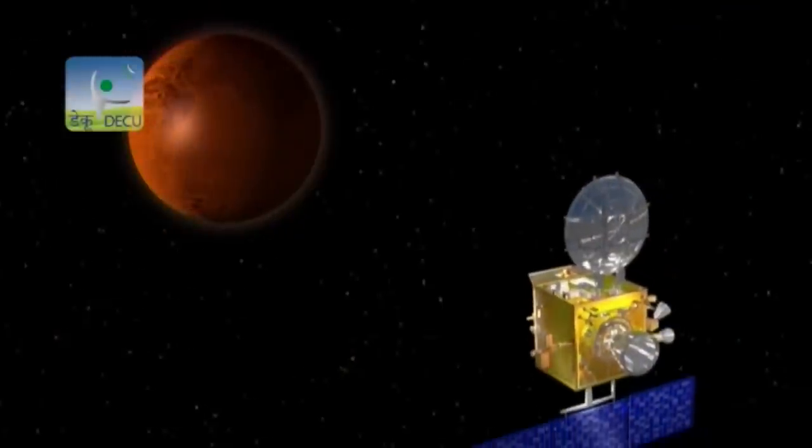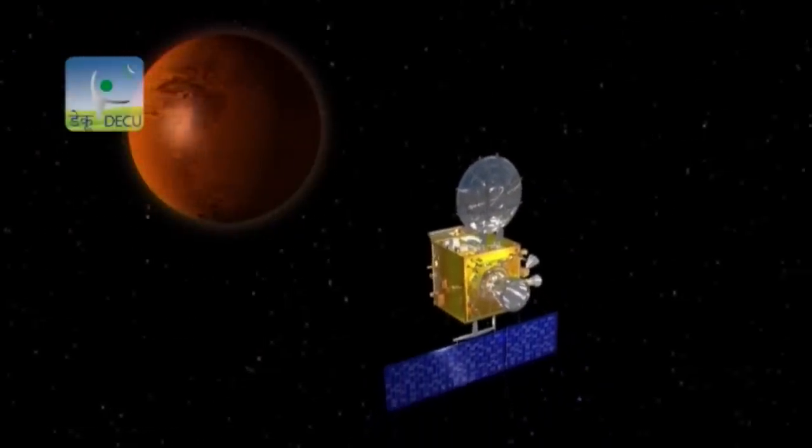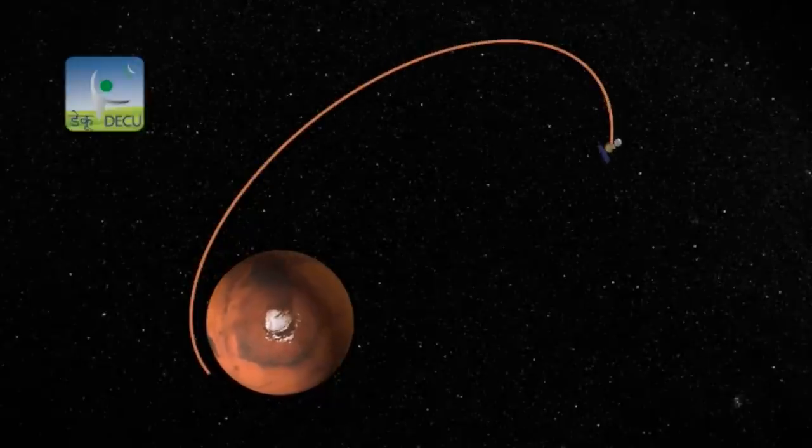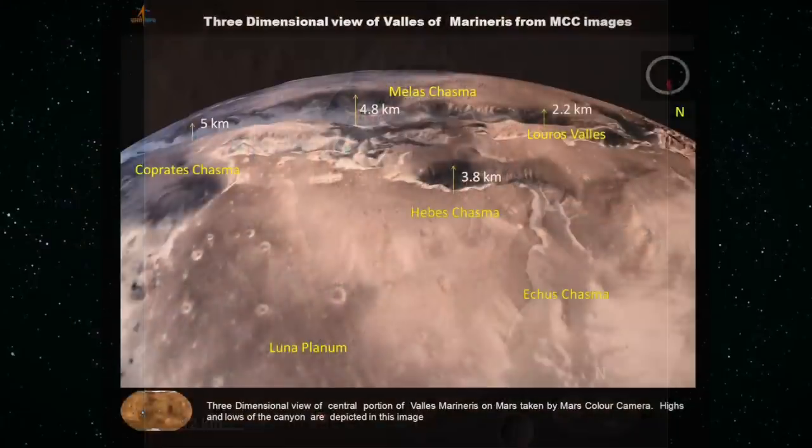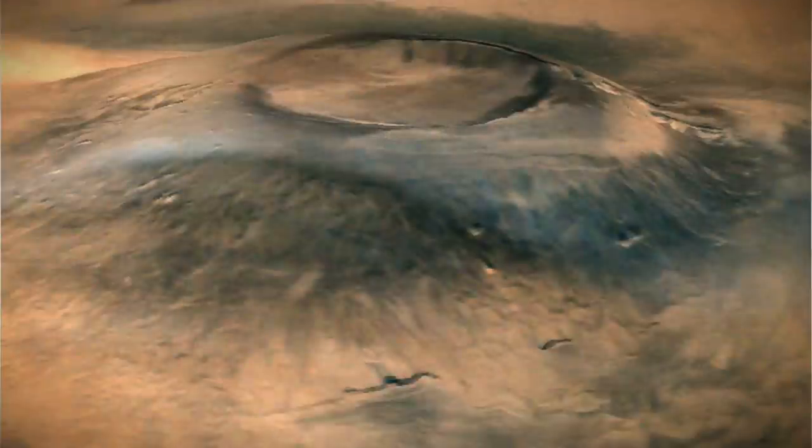To give you an idea how efficient Mars Orbiter's trip was, it fired its thrusters just 11 times for a total of about 80 minutes to travel three quarters of a billion kilometres. Things went so well that it's still got nearly 40 kilos of fuel left in the tank and it should be able to keep sending back photos and scientific data for years to come.